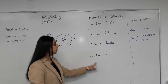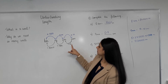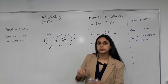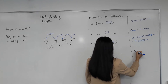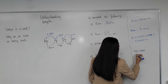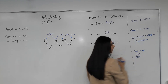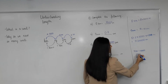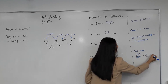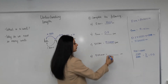Now, millimeters to meters. Dividing by one, two, three zeros. So 500 divided — we can write it as a fraction: 500 over 1000, which gives us 5 over 10, which can be written as 0.5 — one decimal place.